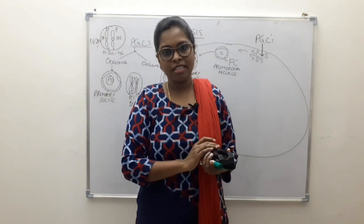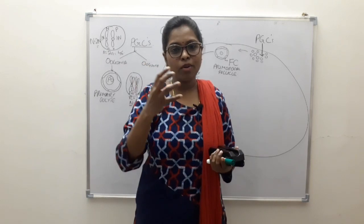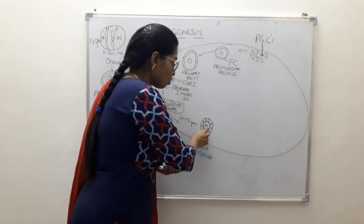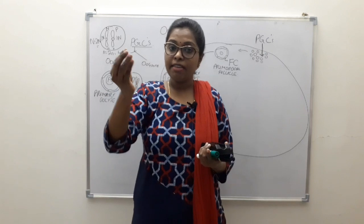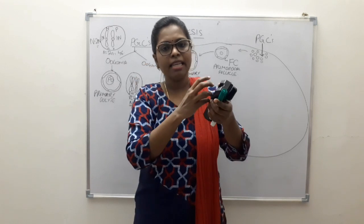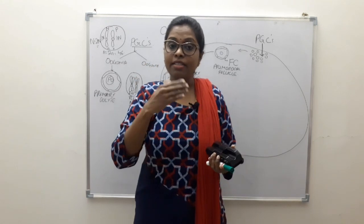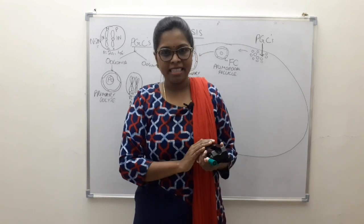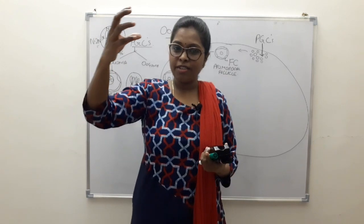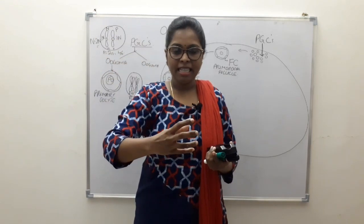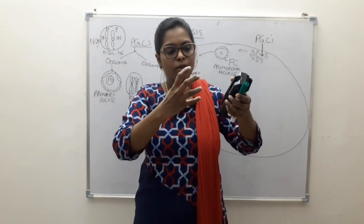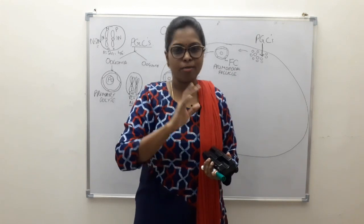Fertilization occurs within the uterine tube. The function of the zona pellucida is to safely bring the embryo from the uterine tube to the uterine cavity, after which it disappears so the embryo can implant into the endometrium. If the zona pellucida disappears before reaching the uterine cavity, the sticky embryo will adhere to any mucosal surface, resulting in ectopic pregnancy.